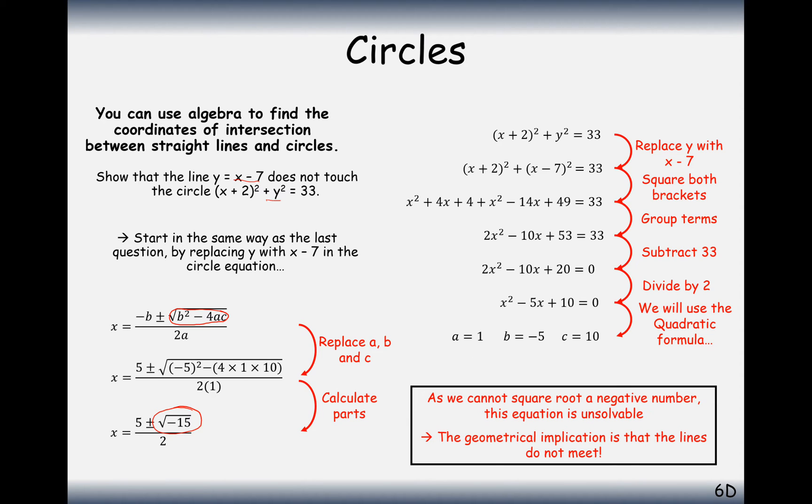Hence, as b squared minus 4ac is less than 0, we do not find any intersections because we can't do the square root of minus 15, and hence the equation of the line and the circle do not meet. Because b squared minus 4ac is less than 0, we get no intersections.